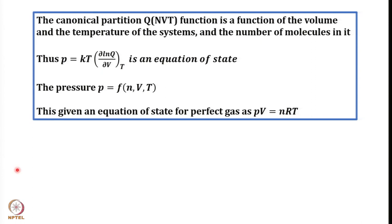We have been discussing many equations, many relations in terms of canonical partition function. The canonical partition function, which we designated as capital Q, is a function of N number of particles, volume, and temperature. This canonical partition function was connected to various thermodynamic parameters, and one such connection was between pressure and canonical partition function: pressure is equal to kT times (∂ ln Q / ∂V) at constant temperature.